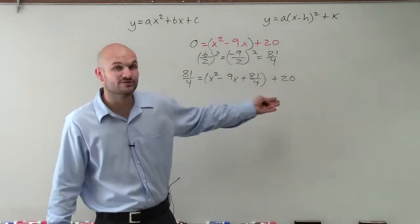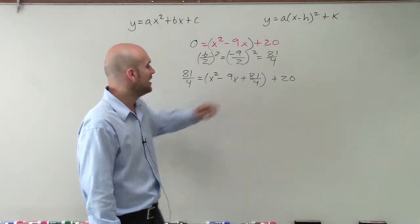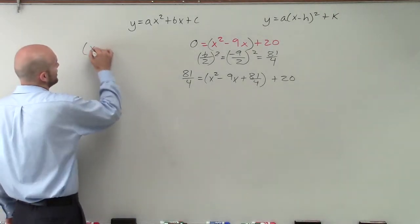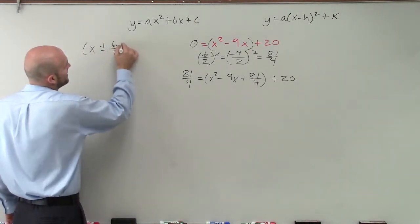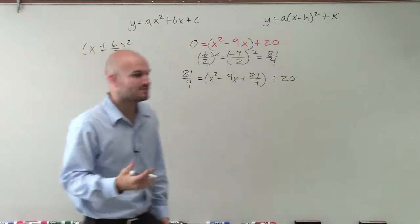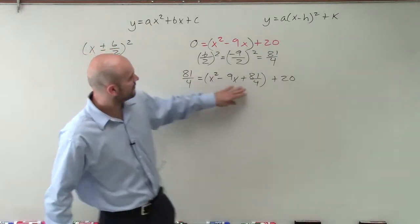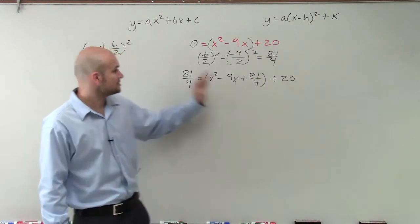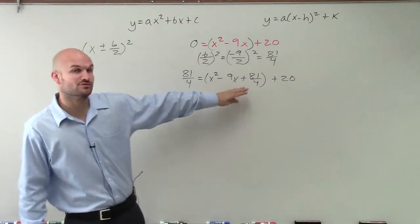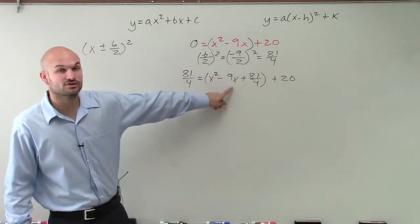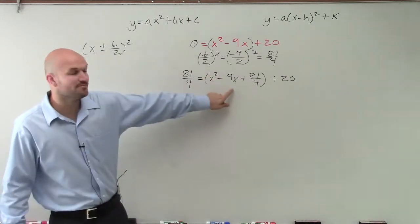Now remember, when we want to factor this down, we can factor it using all the techniques we've talked about. However, if you remember I talked about x plus or minus b divided by 2 squared, that is going to be the binomial of a perfect square trinomial. So this is going to be your binomial squared of a perfect square trinomial when it's positive, when your middle term is positive, and it's negative when your middle term is negative.